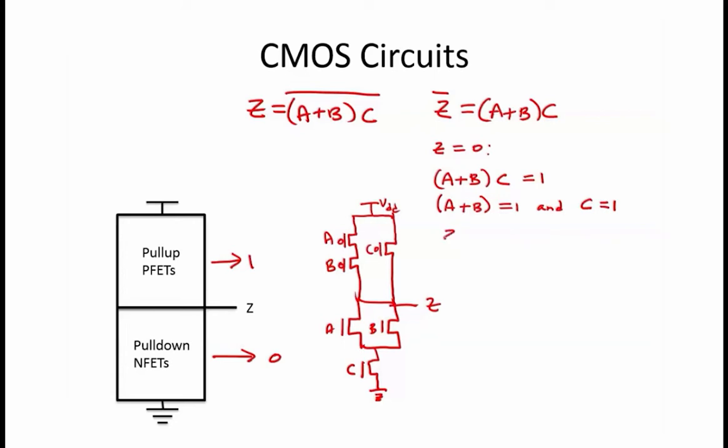we know that the pull-up must make Z equal to 1. Z equals 1 if A or B and C, the whole thing negated, equals 1, or A or B and C equals 0. This is true when either A or B equals 0 or C equals 0, meaning either A equals 0 and B equals 0, or just C equals 0. Pull-up circuits use PFETs, which are on when the input is low or 0. So the equivalent circuit for this is series AB ORD with C, which equals series AB in parallel with C.